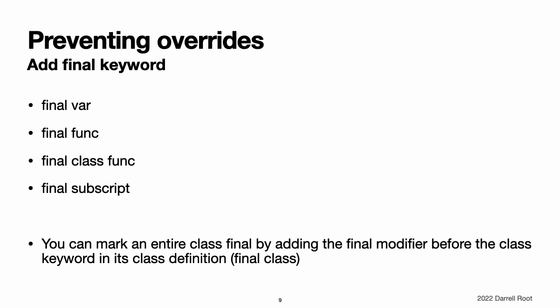Preventing Overrides. You can prevent a method, property, or subscript from being overridden by marking it as final. Do this by writing the final modifier before the method, property, or subscript's introducer keyword, such as final var, final func, final class func, and final subscript. Any attempt to override a final method, property, or subscript in a subclass is reported as a compile-time error. Methods, properties, or subscripts that you add to a class in an extension can also be marked as final within the extension's definition. You can mark the entire class as final by writing the final modifier before the class keyword in its class definition — final class. Any attempt to subclass a final class is reported as a compile-time error.